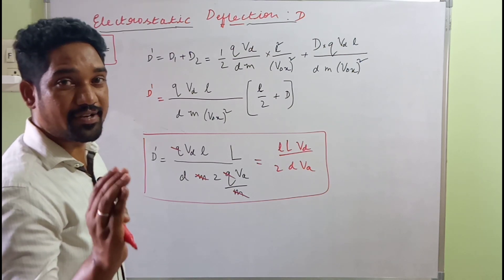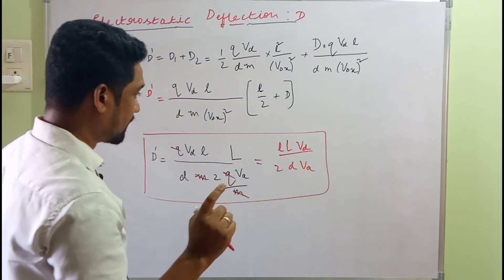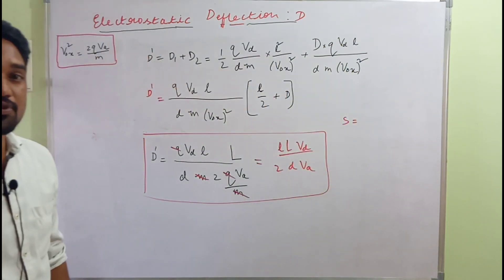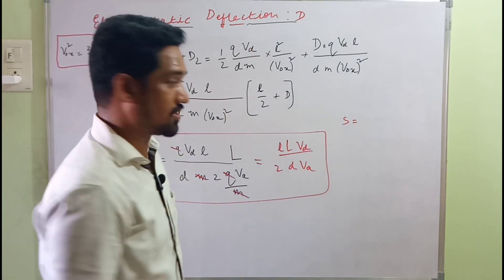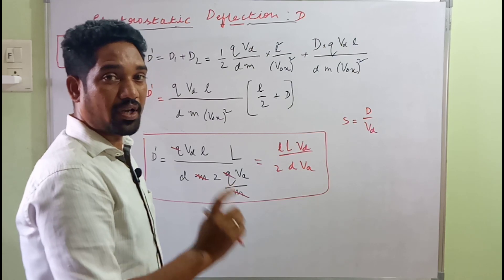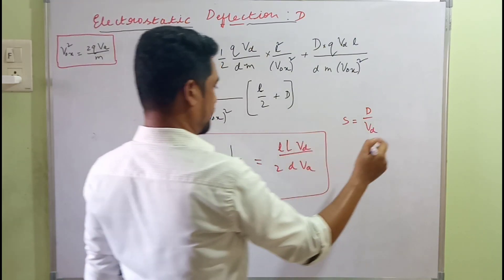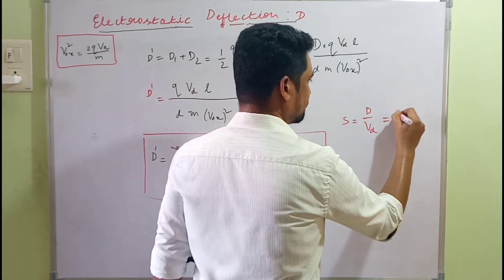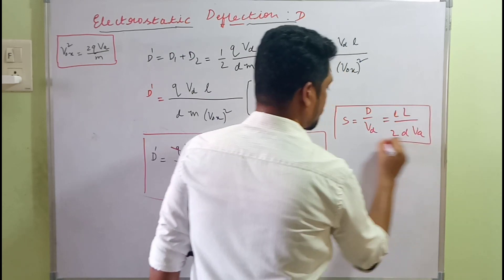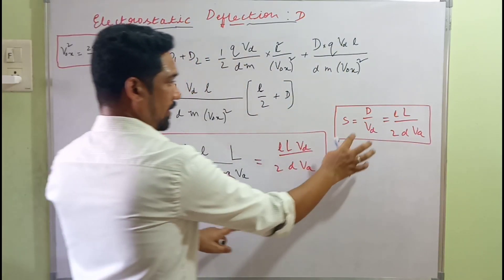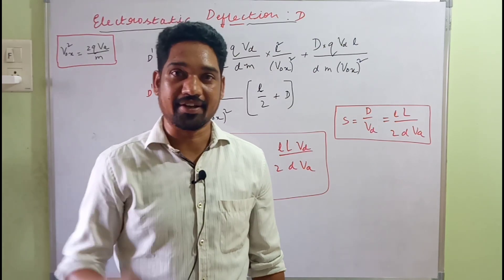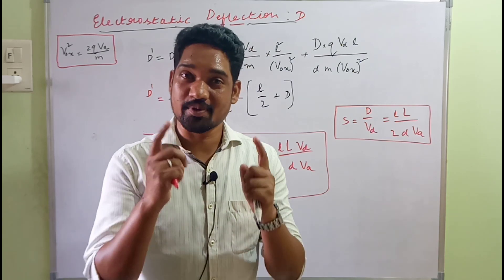Sensitivity S is defined as the deflection produced by the beam per unit deflecting voltage — that is, D-dash divided by Vd, which is the deflection when one volt is applied to the deflecting plates. Dividing the deflection expression by Vd, the Vd terms cancel, giving sensitivity S equals capital L times small l divided by 2 times d times Va. Thank you for watching — please support with your subscription if you found it useful. Stay home, stay safe, and keep smiling.